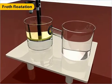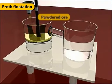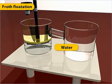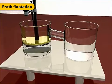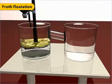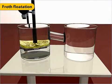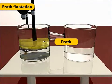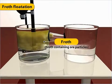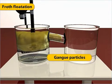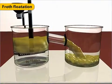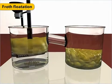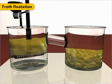In the froth flotation method, the powdered ore is mixed with water and a small amount of pine oil. The resulting mixture is then agitated by blowing compressed air through it. The oil in the mixture forms froth with the air. The froth rises up to the surface containing the ore particles. The gangue particles, on the other hand, settle down in water. The froth is then collected in another container, where it is washed and dried to obtain the concentrated ore.